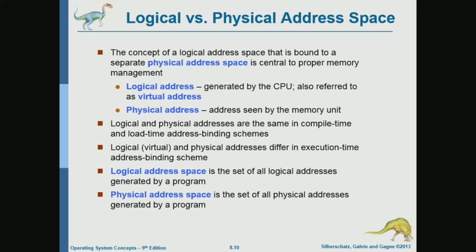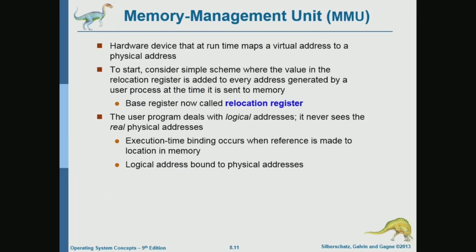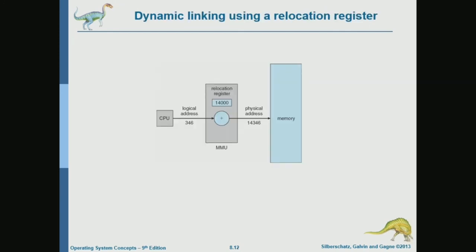The base may change. Who does the translation from a logical address to a physical address? It's a piece of hardware called the memory management unit (MMU) that does the translation using a relocation register. The relocation register is the base register — we call it the relocation register to emphasize that this value may be changed by the operating system. For example, logical address 346 gets added to the value in the relocation register to give a physical address of 14,346, and that's what gets sent to memory.